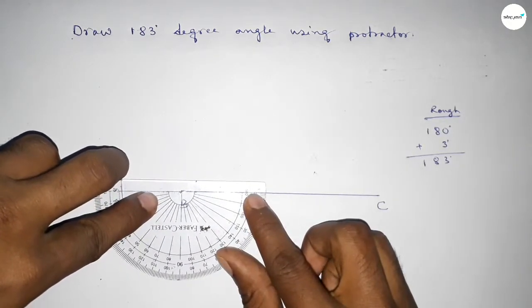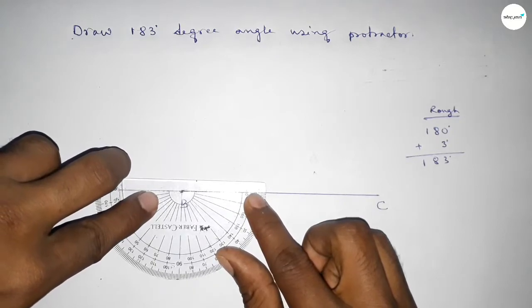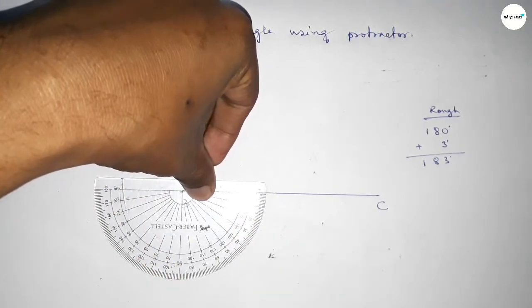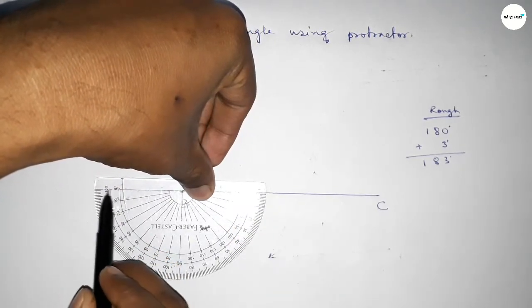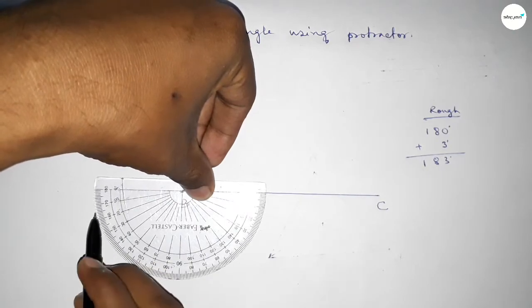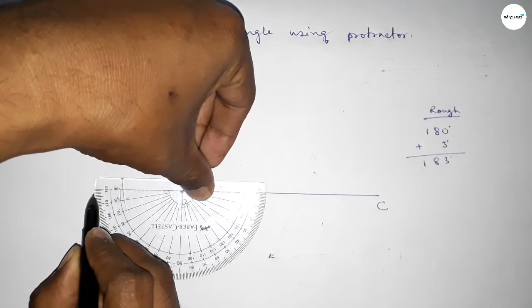So putting the protractor on the point by this way and this is 180 degree and this is 1, 2, 3. So by adding extra 3 degree angle with 180 degree, then we can get 183 degree angle.